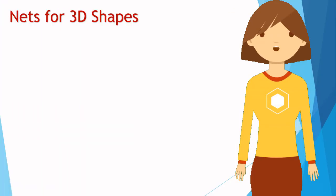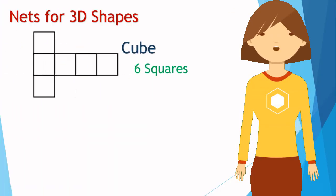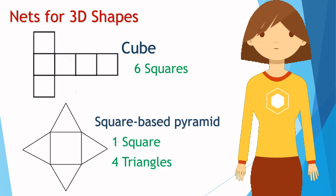For example, six squares can be folded to make a cube. Similarly, one square and four triangles can make a square-based pyramid.